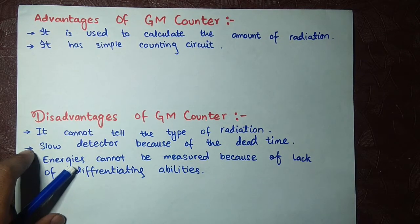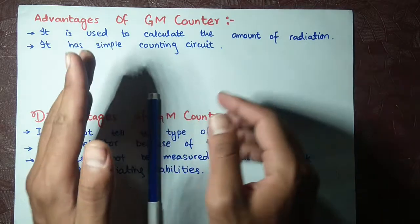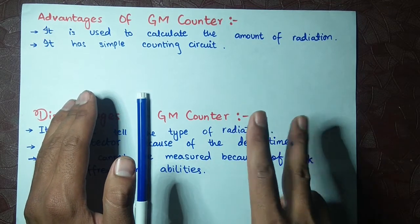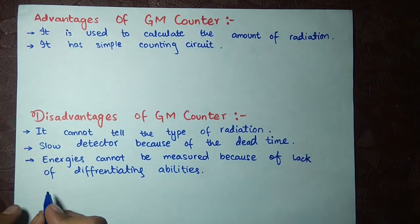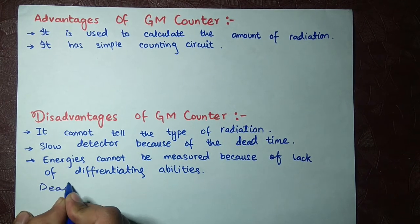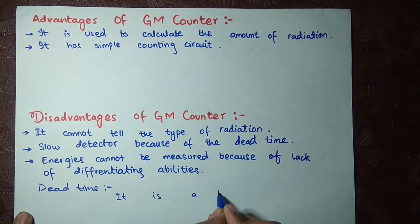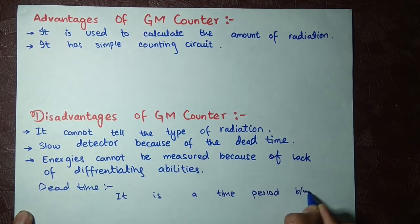We have discussed the first disadvantage — now we will talk about dead time. The GM counter is a slow detector because of dead time. Dead time is a time period between two pulses or two counts.